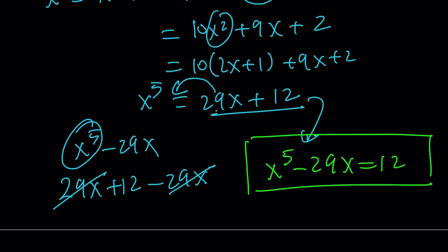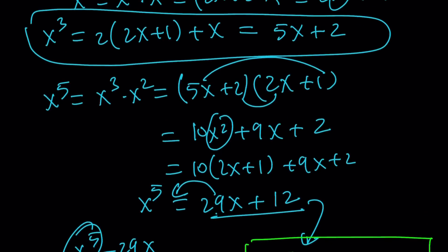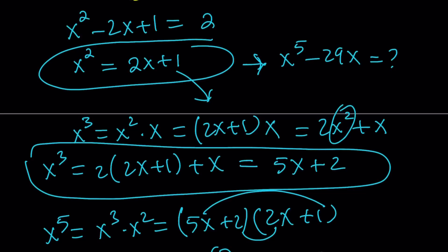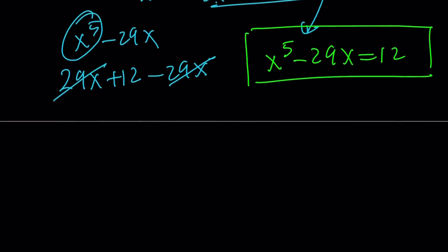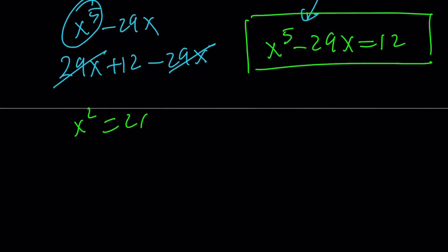Now, what is the third method? Before I briefly talk about the third method, I want to say something. You could also take this x^2 and just square it. We know that x^2 = 2x + 1. You can go ahead and just square it.